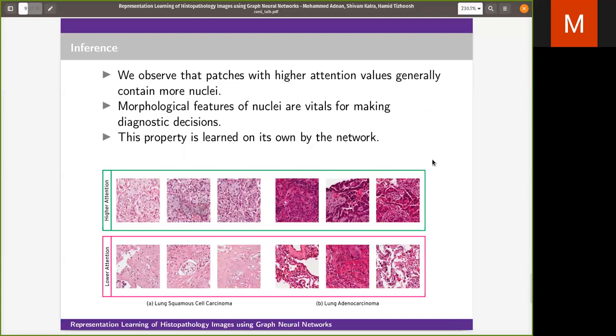One of the important properties of our network is that we use global attention pooling in the pooling layer, which gives us attention scores for each patch. Each of the patches has an attention value attached to it, and we can then visualize the most important patches in the WSI.